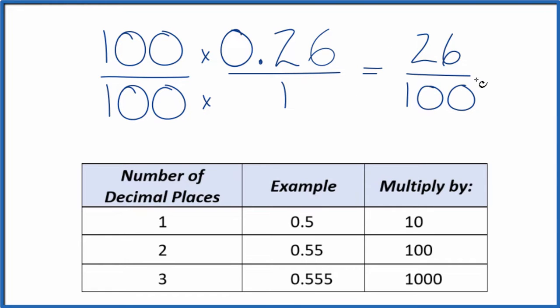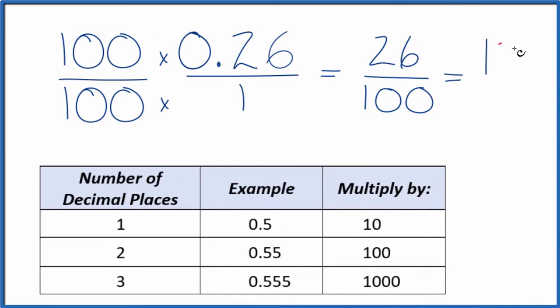And we can reduce this to simpler terms because they're both even numbers. Let's divide 26 by 2, that'll give us 13, then divide 100 by 2, that gives us 50.